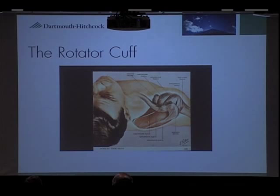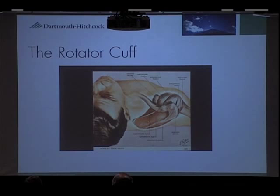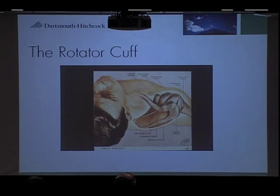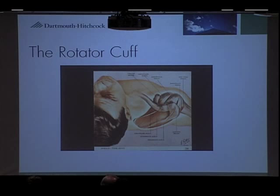I want to show you some pictures of the rotator cuff so you can get a visual and understand what the other talks will cover. Looking at the shoulder from above, here's the supraspinatus muscle — 'supra' means above and 'spinatus' refers to the spine of the scapula. It comes underneath a bony tunnel, wraps around the edge, and brings your arm out to the side. Infraspinatus and teres minor wrap around from behind — 'infra' means below the spine of the scapula — and they perform what's called external rotation.